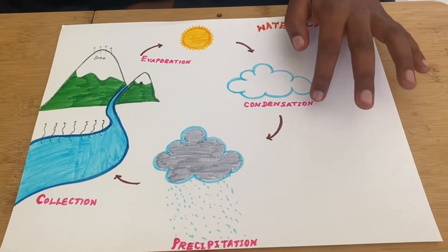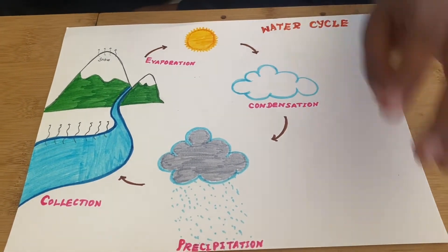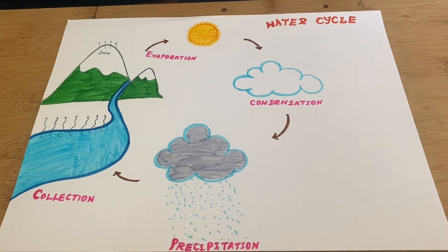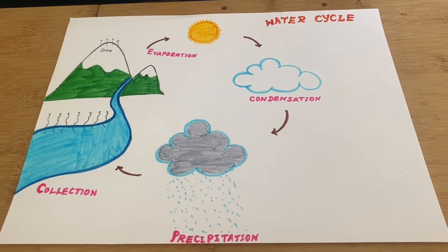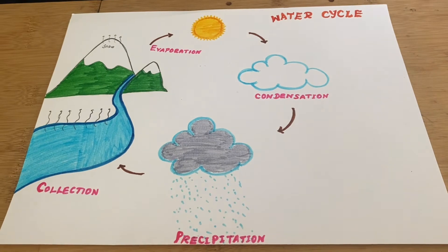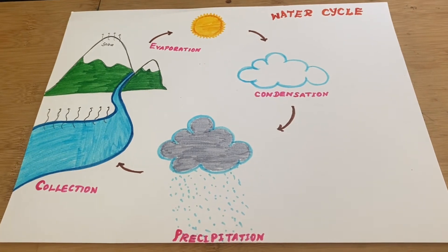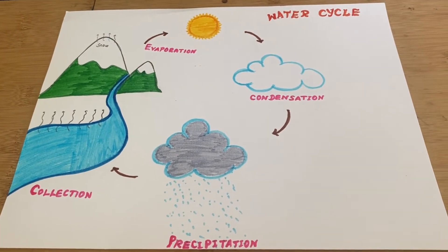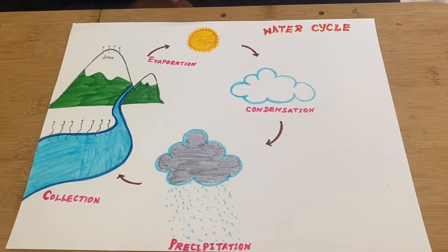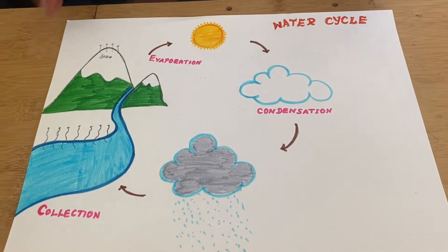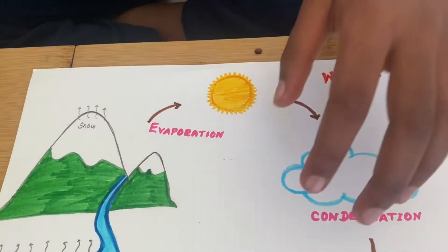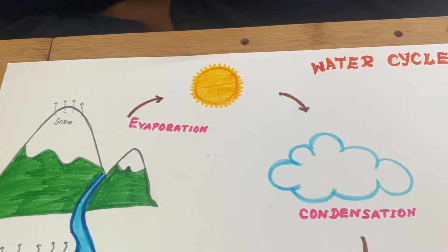Then, the water inside the clouds begins to mix with other water droplets and gets heavier and heavier. When the clouds can't hold it, the water droplets go down as rain, or snow if it's on a mountain. This is called precipitation.